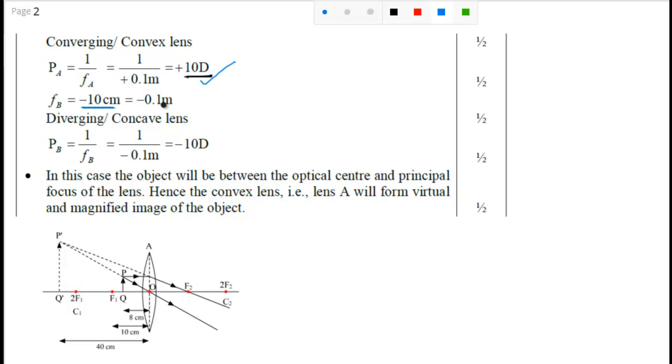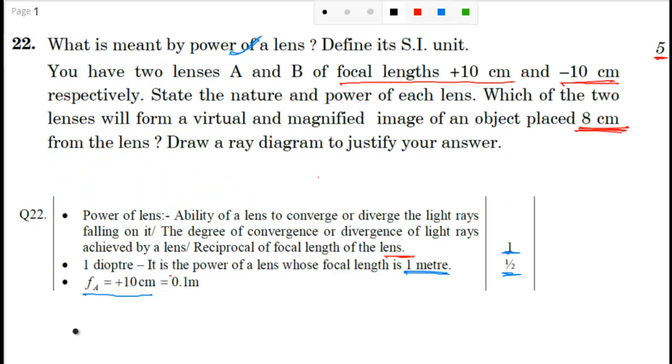fB is minus 10 centimeter. So that is again minus 0.1 meter diverging or that is concave lens already discussed. The power of that lens will be 1 upon fB that is 1 upon minus 0.1 meter, that is minus 10 D. So we are done up to this point. We have mentioned the nature and power of each lens.